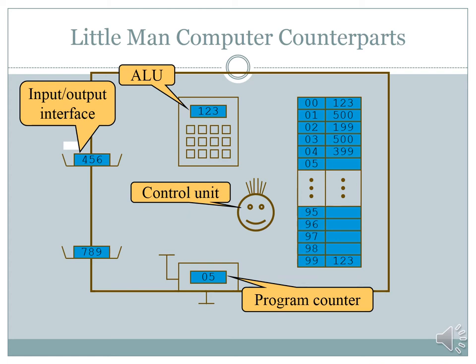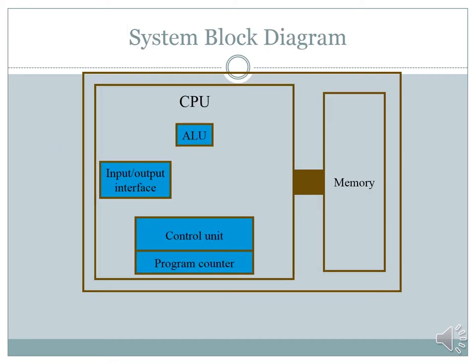In the Little Man Computer, the brain is the control unit — represented as the head of a human being. The memory is also in the brain, and the input/output interface is also inside there — the brain uses the eyes to see. The Arithmetic Logic Unit for the human computer would be a calculator, the input/output interface might be a file cabinet or paper used for writing, and the program counter may be a log sheet of what you will be doing next.